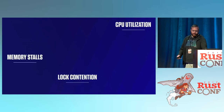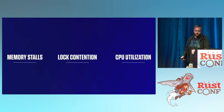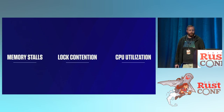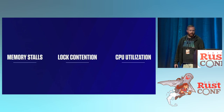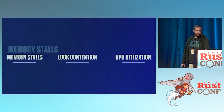In native programs, there are generally three causes of performance problems: memory stalls — essentially talking to DRAM — lock contention, and CPU utilization.